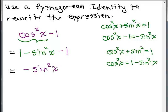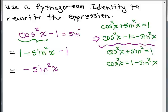So somebody else might come up with the answer that way. Here was the first way: if you take the original basic identity and write cosine squared X minus 1 on both sides, you get the answer negative sine squared X right away. The other way is to replace cosine squared X with 1 minus sine squared X and then simplify to get negative sine squared X.